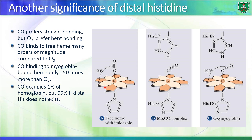Oxygen, by contrast, prefers to interact with iron at an angle, so there is good affinity of oxygen toward binding to heme. The hydrogen bonding between the distal histidine and oxygen further enhances this interaction.